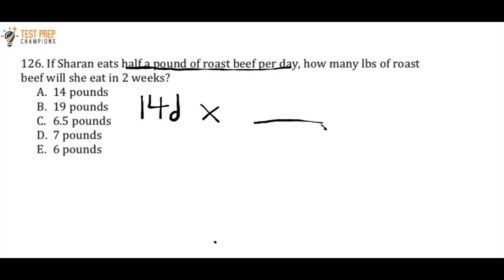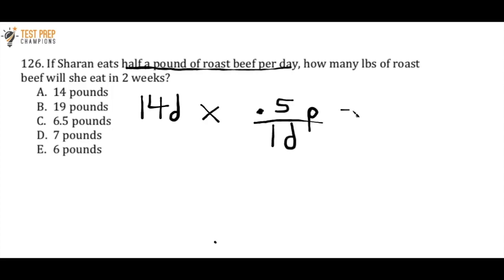Half a pound is just equal to 0.5. So I'm going to write 0.5 P here for pounds, and we know that it's half a pound or 0.5 pounds per one day, so I'll put 1D down here. If I do 14 times 0.5, I'm going to get 7 pounds.